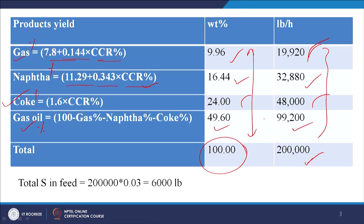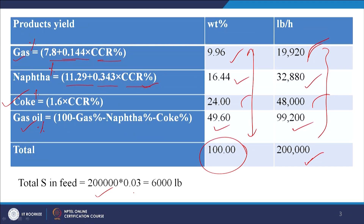Now we find sulfur in these products. Originally 3% sulfur is in the feed: 200,000 × 0.03 = 6,000 pound of sulfur per hour. The basis is 1 hour of operation — the plant consumes 2 lakhs pound of feedstock containing 6,000 pound of sulfur.